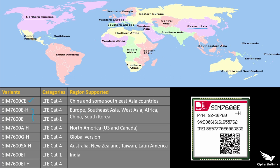The SIM7600E-H and E variants are supported in Europe, Southeast Asia, West Asia (also known as the Middle East), Africa, China, and South Korea. So just by looking at this table you get the idea of which module you can use in your region. The next module is SIM7600A-H, supported in North America — the US and Canada. If you live in that region, you can straight away go with this particular variant.